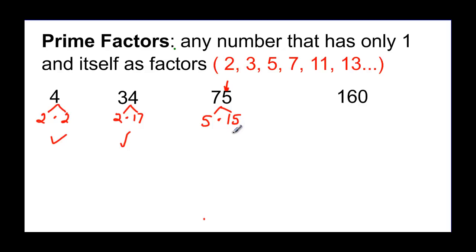And 15 is not a prime number, so I have to do it again. And it ends in 5, so I know that it's going to be divisible by that prime number 5. And 5 times 3 is 15. And 3 is one of my prime numbers up here. So I know that 5 times 5 times 3 is equal to 75. That's the prime factorization of 75.